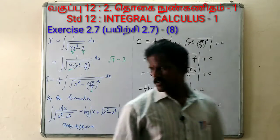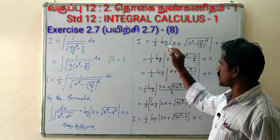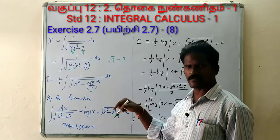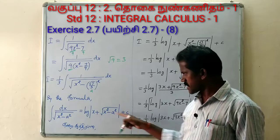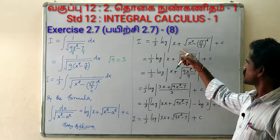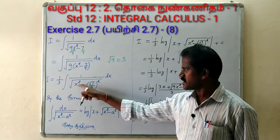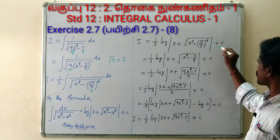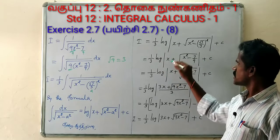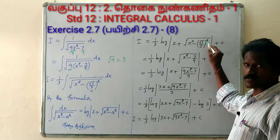We apply this formula. Applying the right-hand side formula: log of x plus root of (x² minus a²), plus C. In the next step, 1 by 3 into log of x plus root of (x² minus a²) plus C.